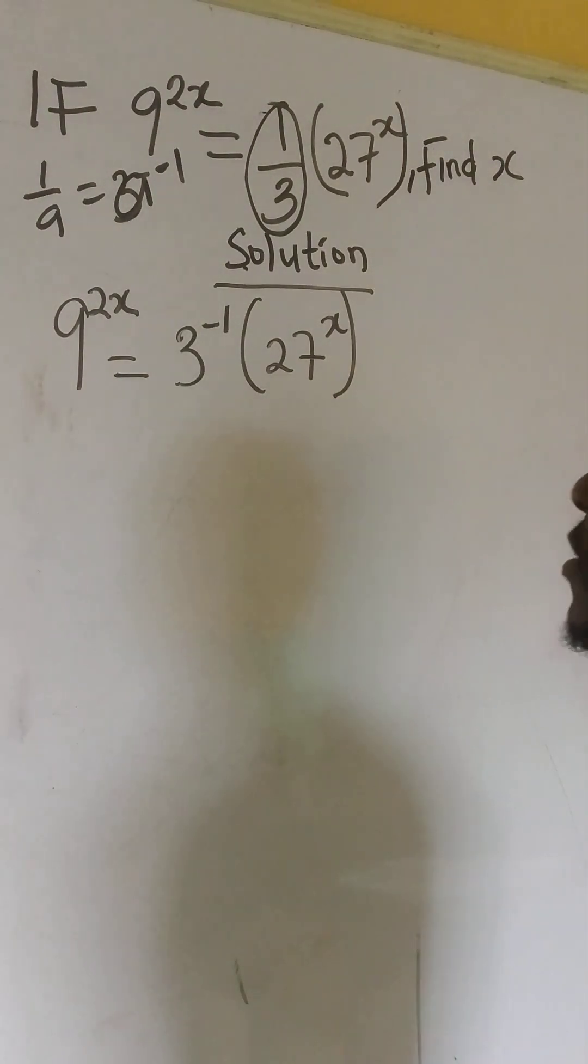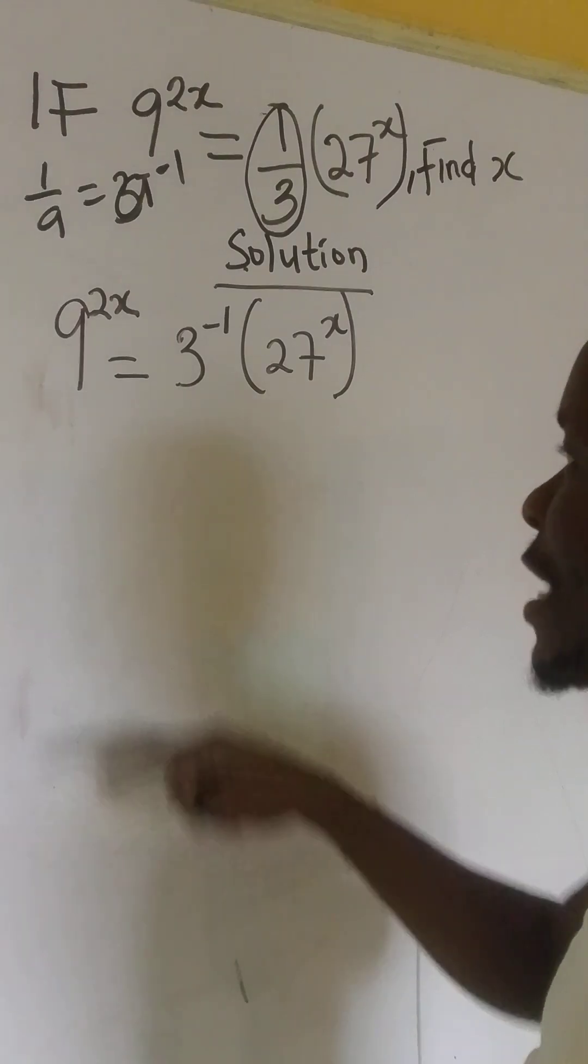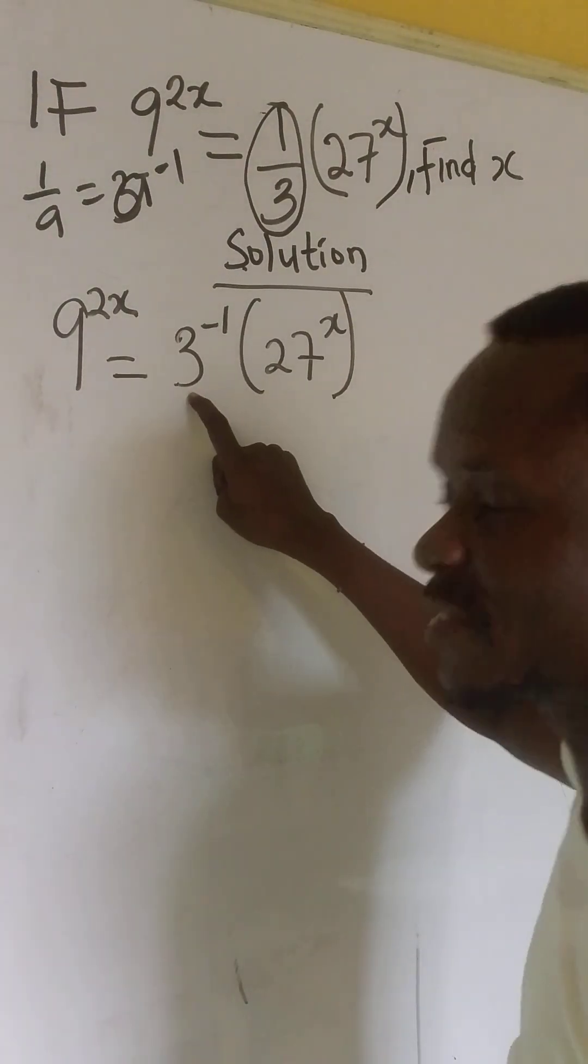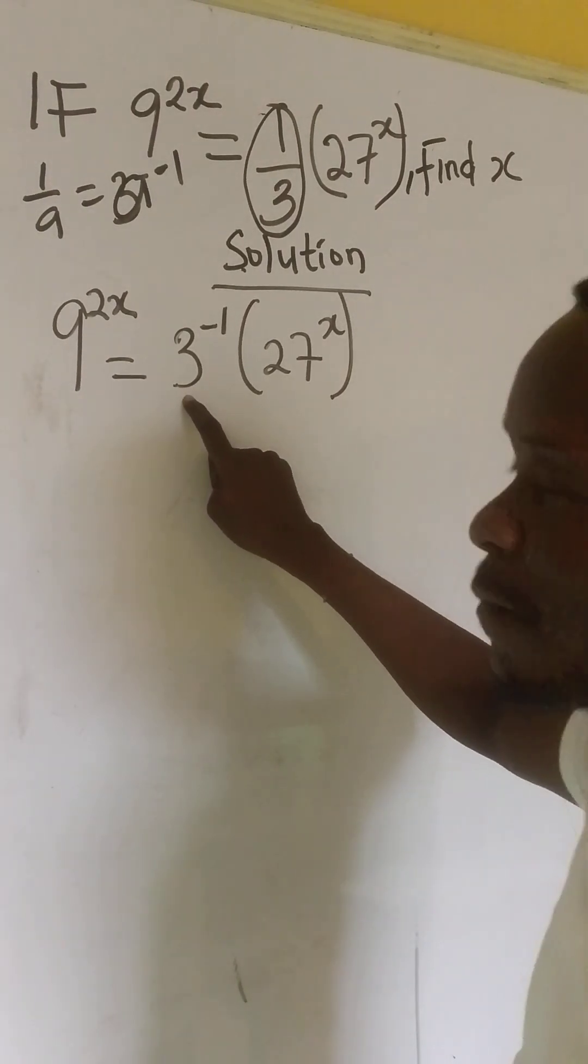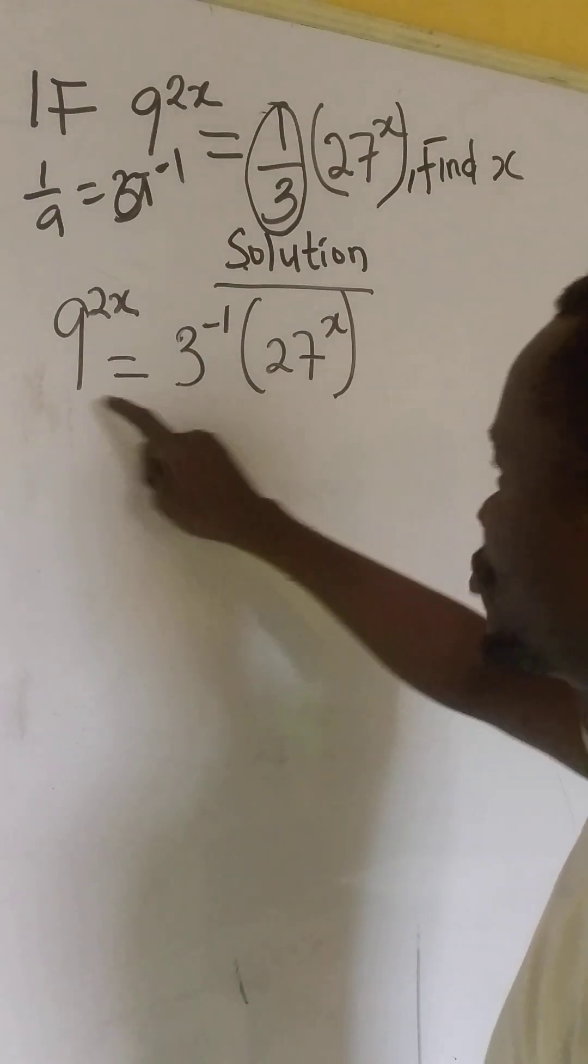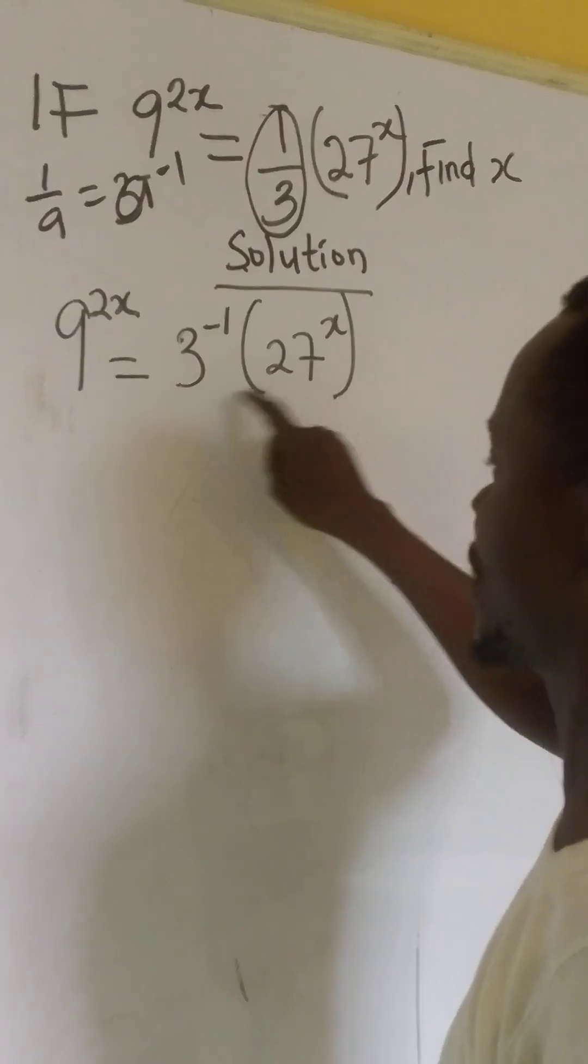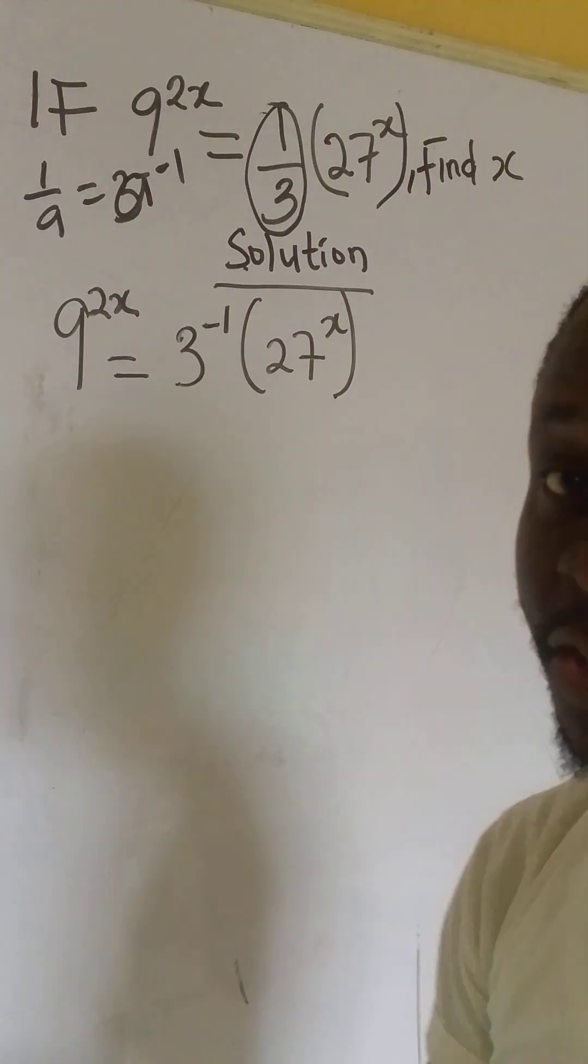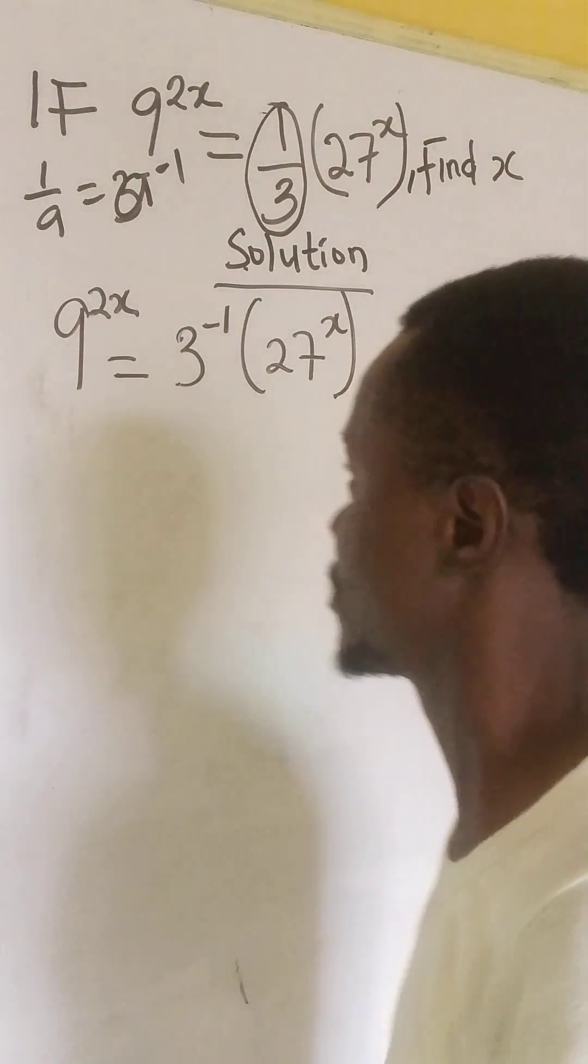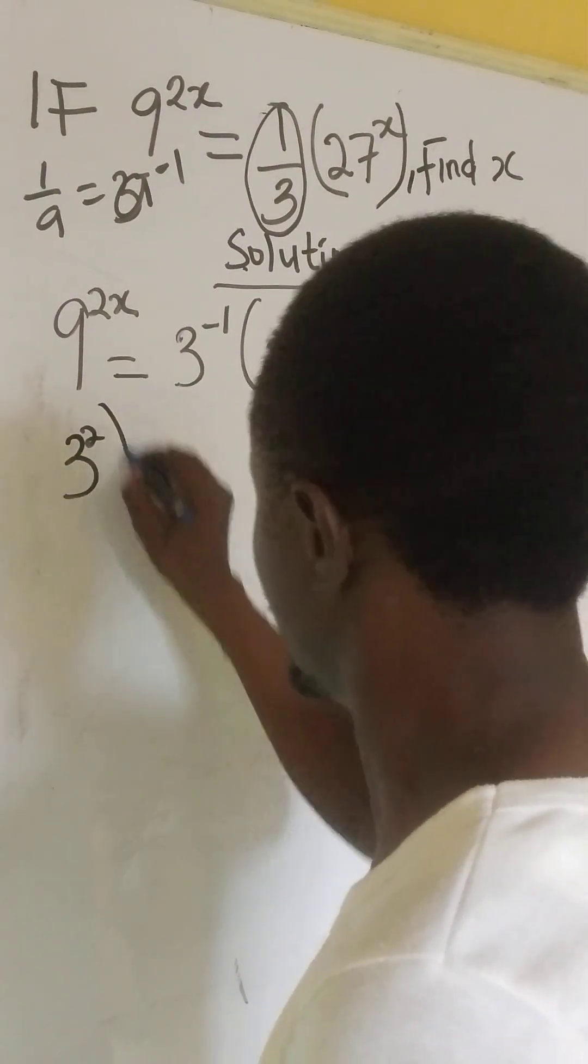Now, the next thing is, we will express the bigger number in terms of the smaller number. This is 3, it is a prime number. So, we look for a way of bringing 9 to this number. Now we have 3 times 3, that's 3 in two places. So, we can say, 3 to the power of 2,